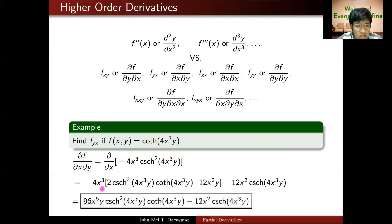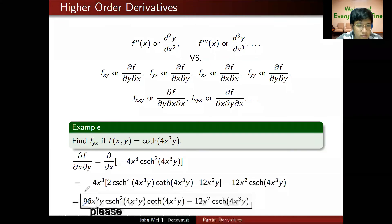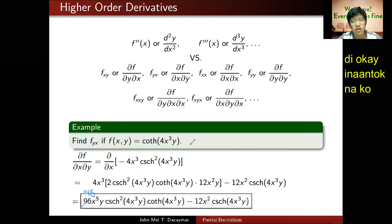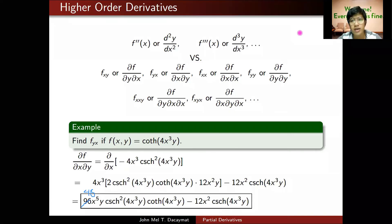Simplifying: when I combine 4x³ times 12x²y, this is 96x⁵y² csch² coth minus 12x²y csch⁴. Actually, the first term is 48, not 96. This is 48x⁵y² csch² coth minus 12x²y csch⁴.